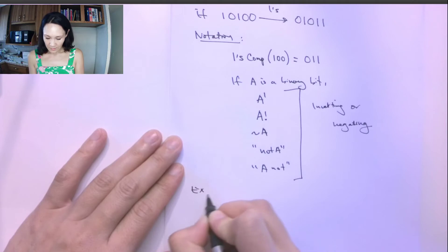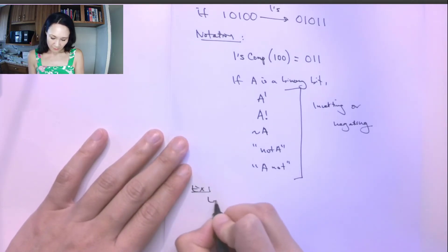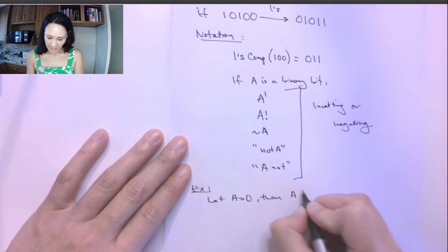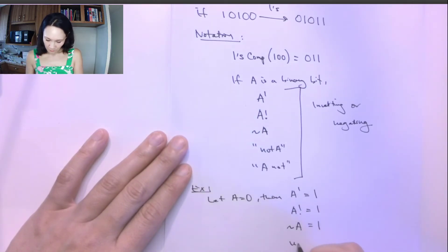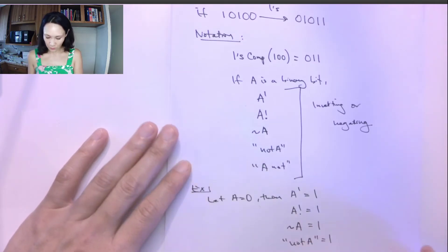So an example is let's let A equal zero. Then we would say A not is equal to one. And likewise, we could also say A not is equal to one, not A is equal to one, or the words not A or A not is equal to one.